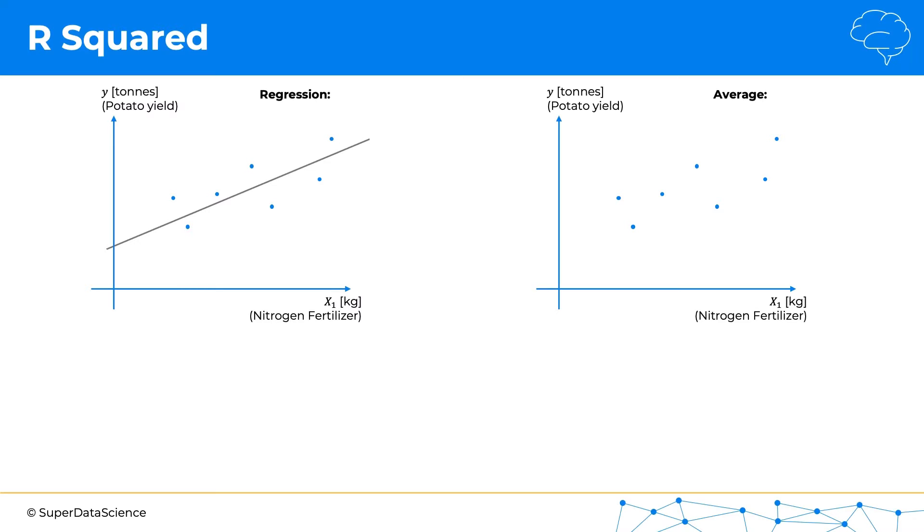So we'll start with the regression. Let's draw our regression line as usual, let's project vertically our data points onto it. And for each data point, we're going to look at the difference between yi, the actual value, and yi hat, the predicted value.